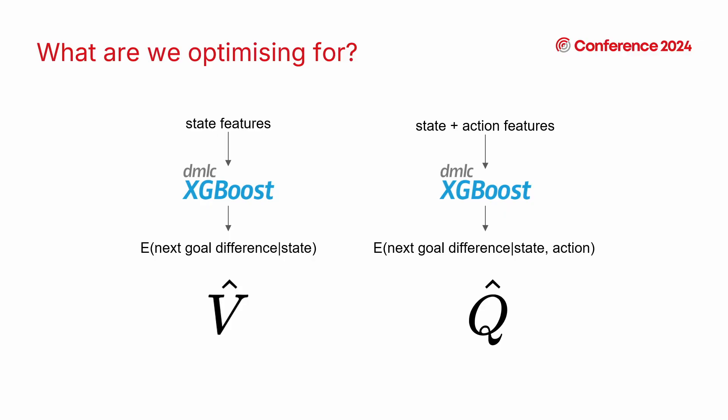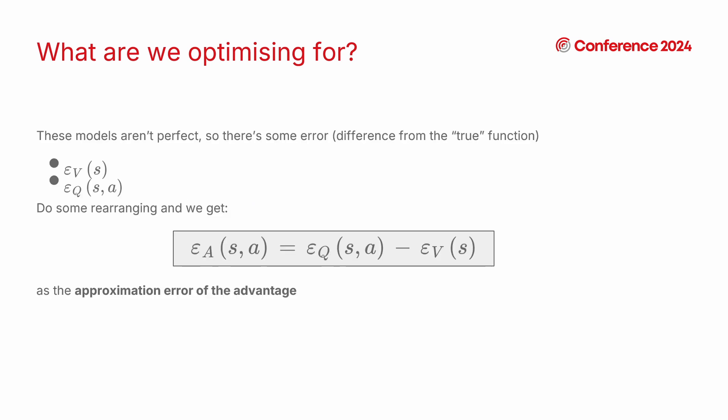Imagine we're training a possession value model and we set it up like this. We've got this estimate of V which is the value before you perform the action we call that V hat. We just get this by building some state features, throwing them into some machine learning algorithm and then we get our estimate of V and then we do the same thing for the Q. So as I said there'll be some error associated with these models. There'll be some difference from the true function that we're trying to approximate. We're going to call these epsilon. You can plug this into the formula to compute the value added and you get this relationship between the errors for those individual models.